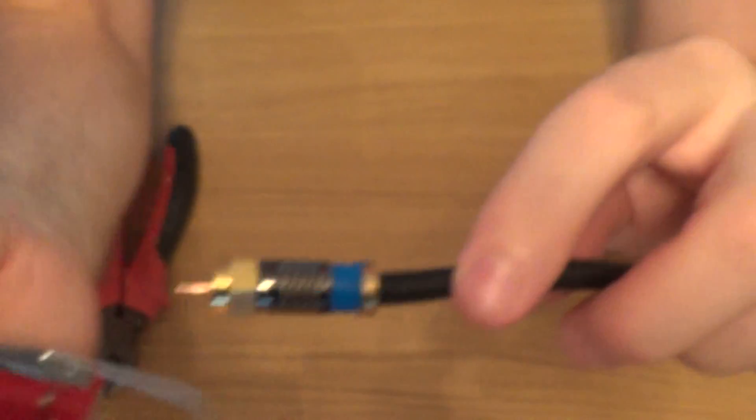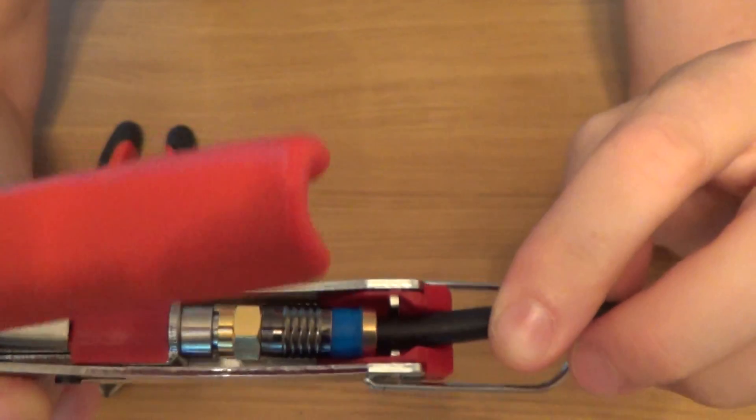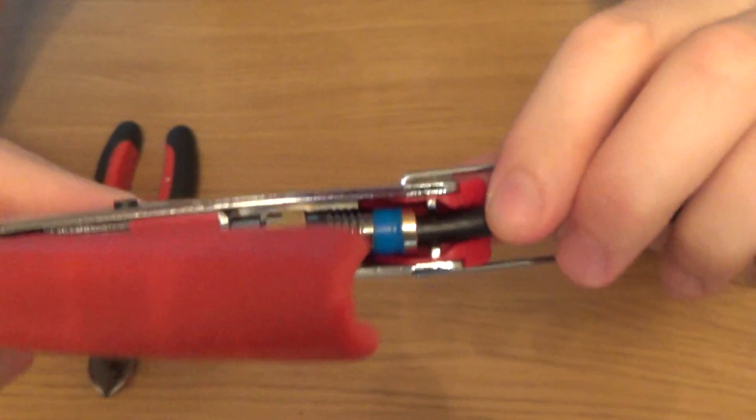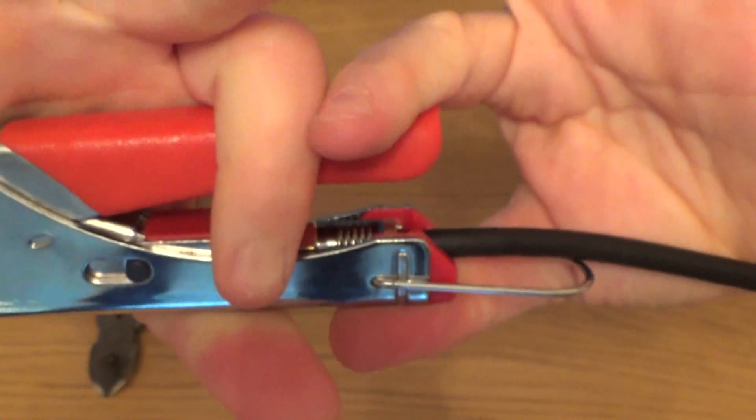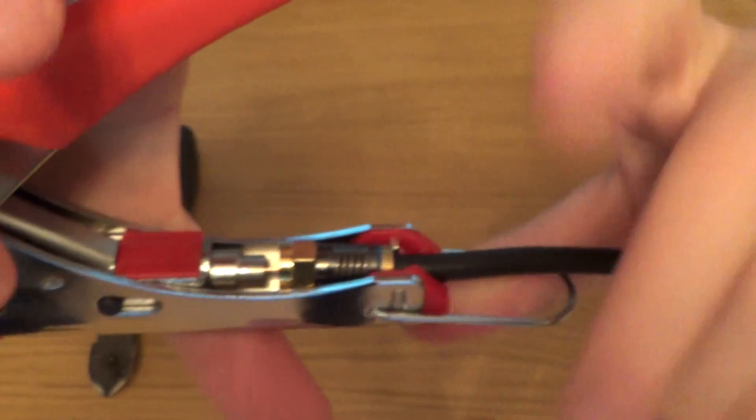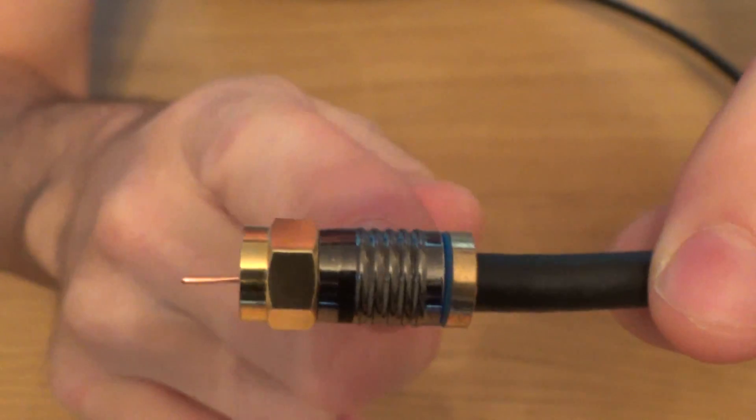Then you get your tool, load it in there like that, then you crimp it down. And that now has pushed the blue plastic right up into the body of the plug.